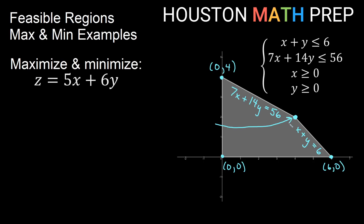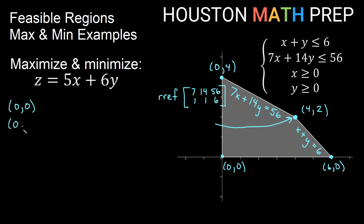To find the interior intersection point efficiently, we can solve the system using row reduction on a graphing calculator with matrices. We set up the matrix with rows 7, 14, 56 and 1, 1, 6, then row-reduce. If you've graphed very precisely you might already see it's the point 4 comma 2. So our four vertices are 0 comma 0, 0 comma 4, 6 comma 0, and 4 comma 2.